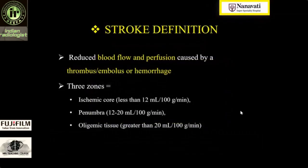How do we define stroke? It is reduced blood flow and perfusion caused by a thrombus or embolus, or it can be because of hemorrhage. Whenever a particular brain parenchyma undergoes stroke, there are basically three zones created: the ischemic zone, which receives blood supply less than 12 ml per 100 gram per minute of perfusion; second is the penumbra; and third is oligemic tissue.